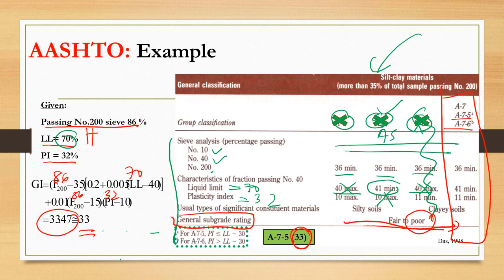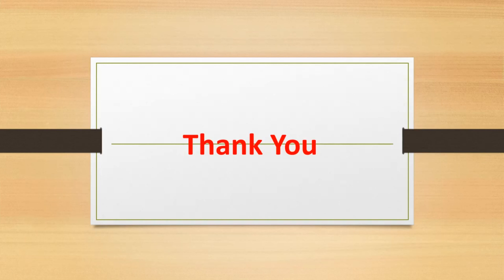I hope you can understand those three examples we discussed — the standard USCS example, the borderline case, and the AASHTO H2 example — based on those two classification systems. With that, we end the lecture for the soil classification topic, which we have covered from Part One through Part Three. Thank you very much and see you later.